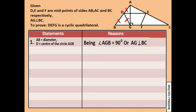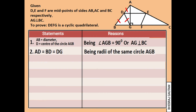So statement 2 can be written as AD = BD = DG, as all radii in a circle are equal.